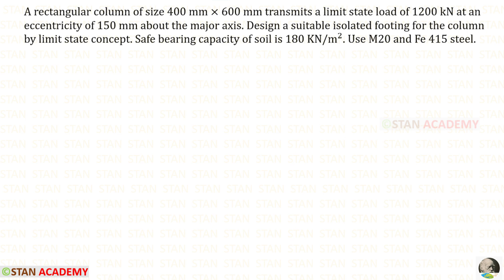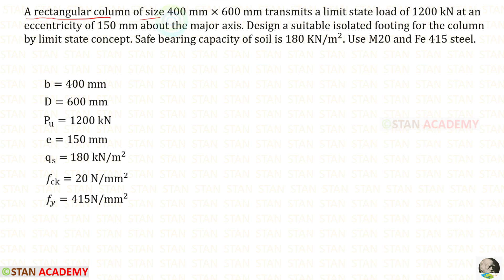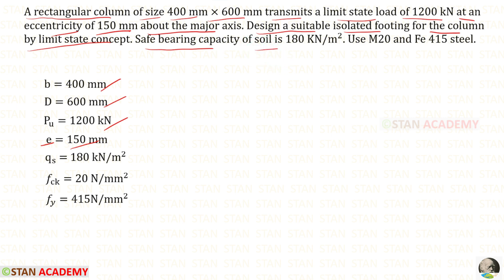Hello everyone. Today we are going to design a rectangular footing. A rectangular column of size 400 mm by 600 mm — B is 400 and D is 600 — transmits a limit state load of 1200 kilo Newton at an eccentricity of 150 mm about the major axis. Design a suitable isolated footing by limit state concept. Safe bearing capacity of soil is 190 kN/m². Use M20 concrete and Fe415 steel; FCK is 20.